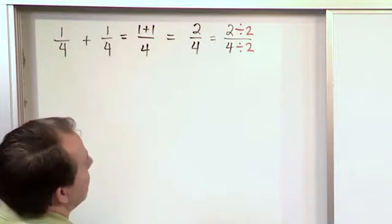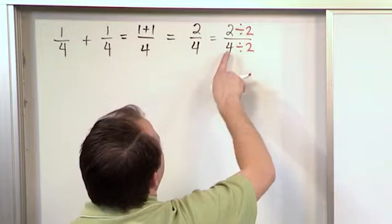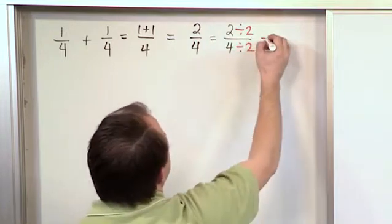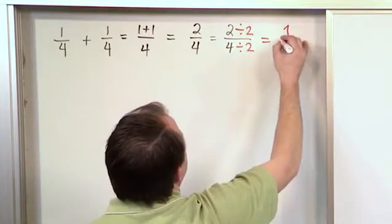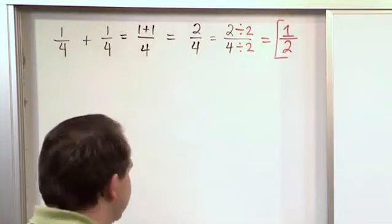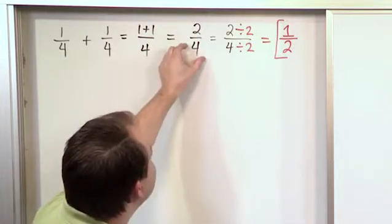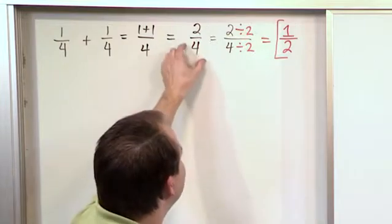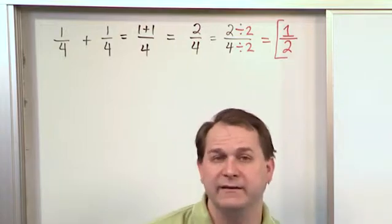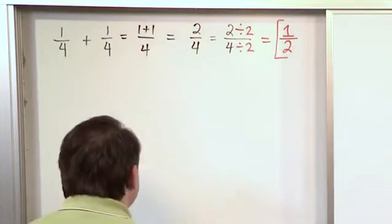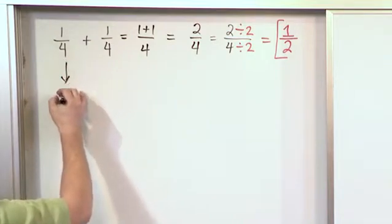You're just changing the way it looks on the board — it represents the same amount of stuff. So since we have 2 fourths as the answer, we can divide the top by 2 and also divide the bottom by 2. 2 divided by 2 is 1, and 4 divided by 2 is 2. So the answer is 1 half — that's what you would circle on your paper. Usually when you circle things on your exam or test, you want to simplify to lowest terms.